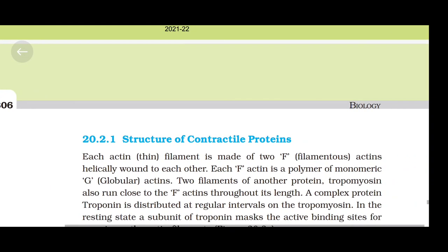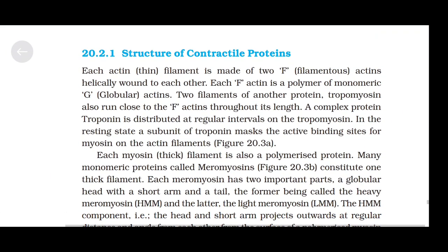Structure of contractile proteins. Each actin thin filament is made up of two F-actin (filamentous actin) strands helically wound to each other. Each F-actin is a polymer of monomeric G-actin (globular actin). Two filaments of another protein, tropomyosin, also run close to the F-actins throughout their length. A complex protein, troponin, is distributed at regular intervals on the tropomyosin. In the resting state, a subunit of troponin masks the active binding sites for myosin on the actin filaments.